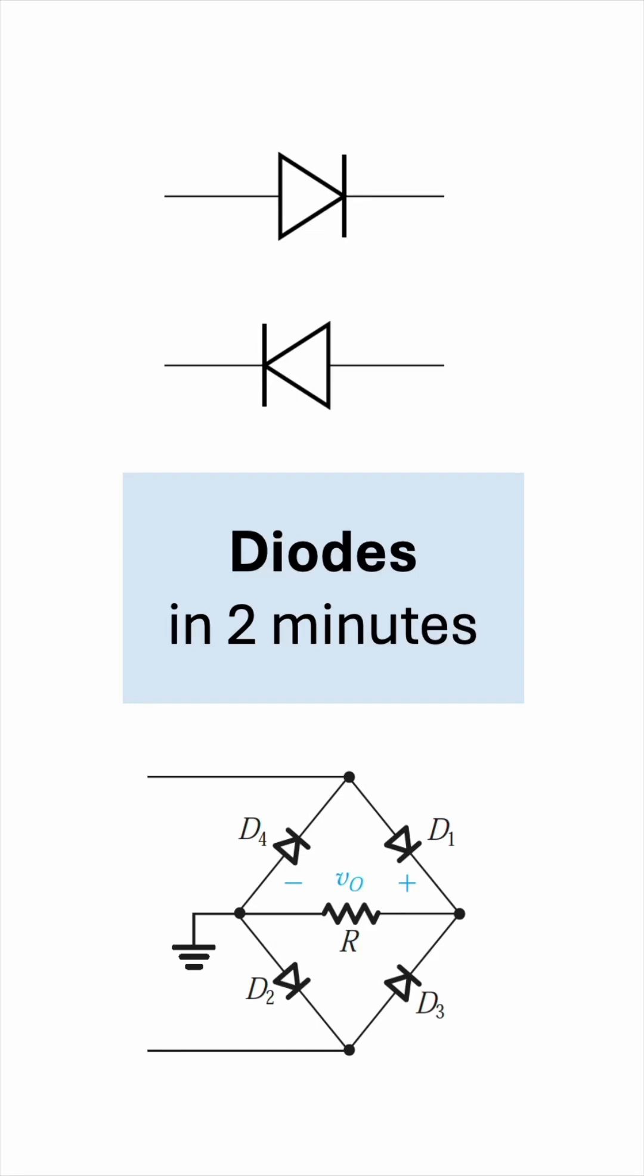Diodes explained in two minutes. The diode is a two-terminal device. This is the positive terminal, called the anode, and this is the negative terminal, called the cathode.